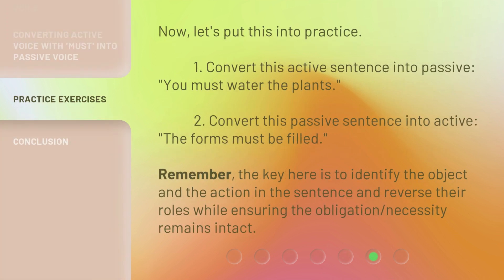Now, let's put this into practice. Exercise 1: Convert this active sentence into passive — 'You must water the plants.' Exercise 2: Convert this passive sentence into active — 'The forms must be filled.' Remember, the key here is to identify the object and the action in the sentence and reverse their roles while ensuring the obligation and necessity remains intact.